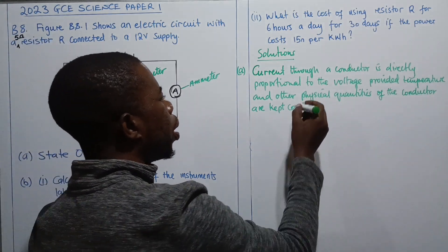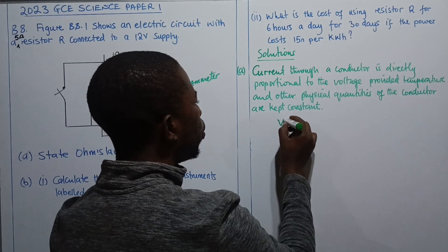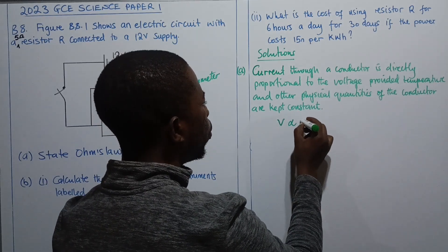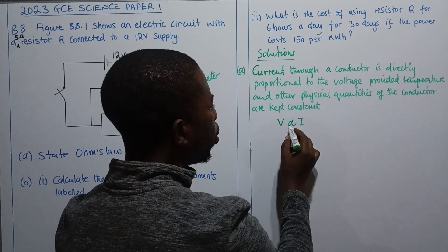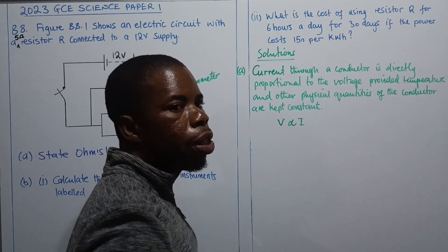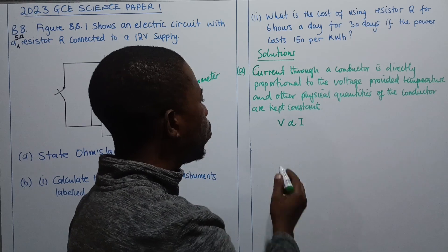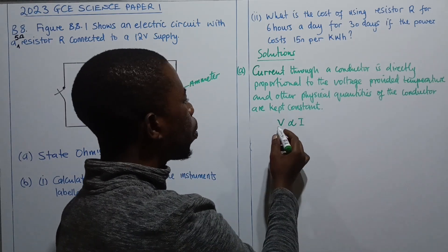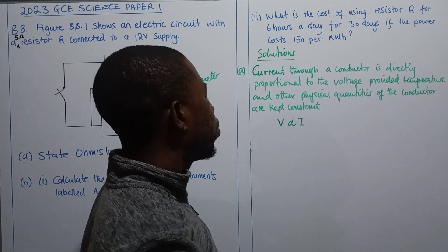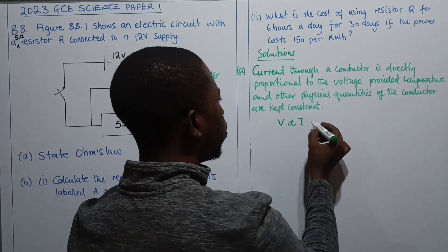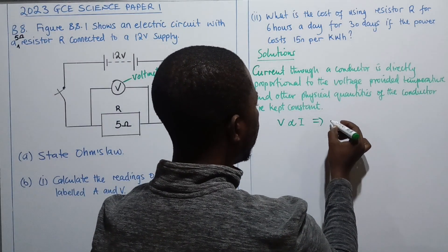Mathematically this means that voltage is directly proportional to current. The proportionality symbol means that when the voltage increases, current also increases in the same ratio.